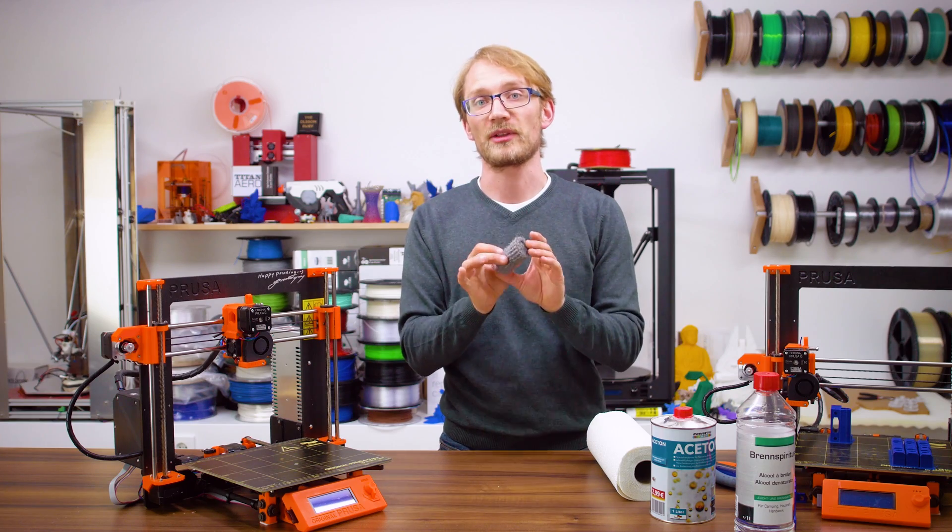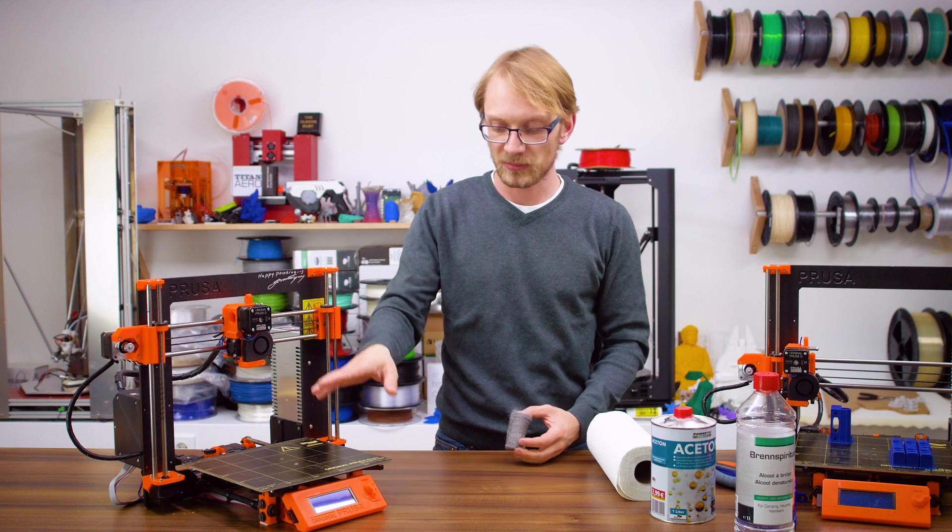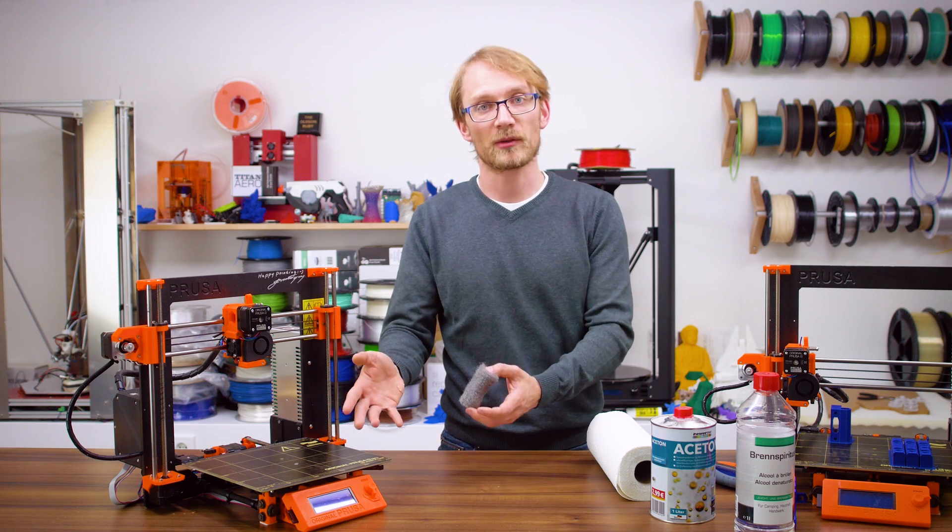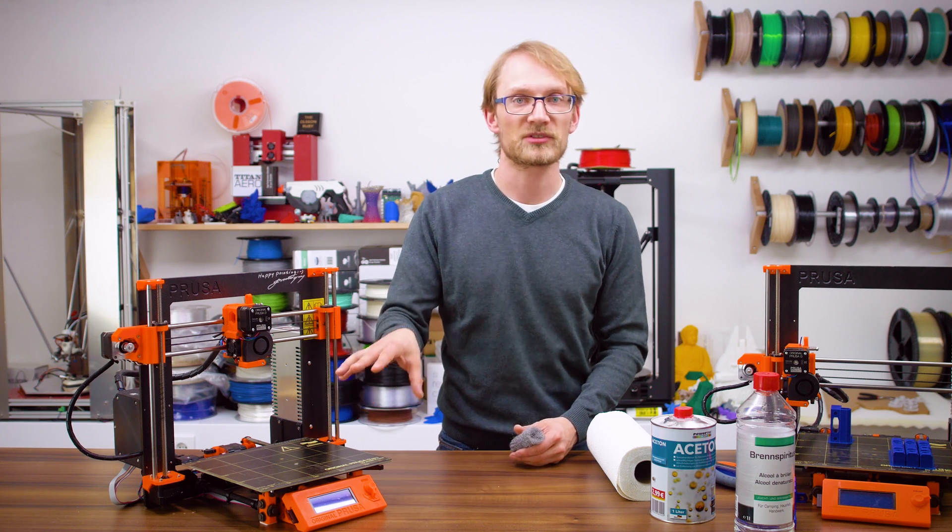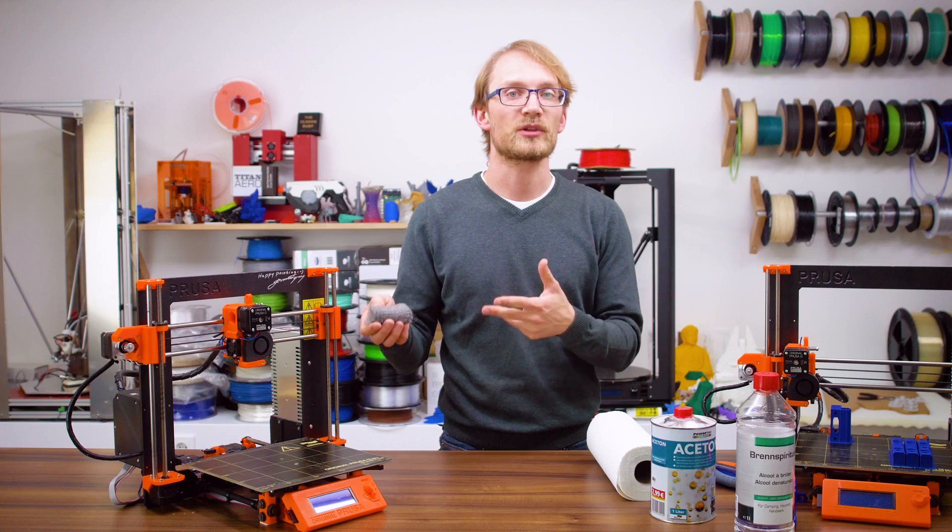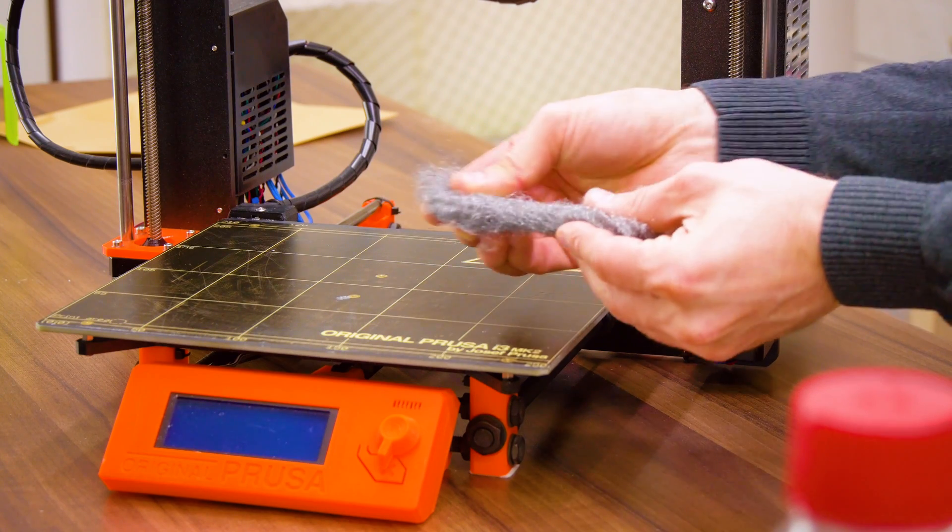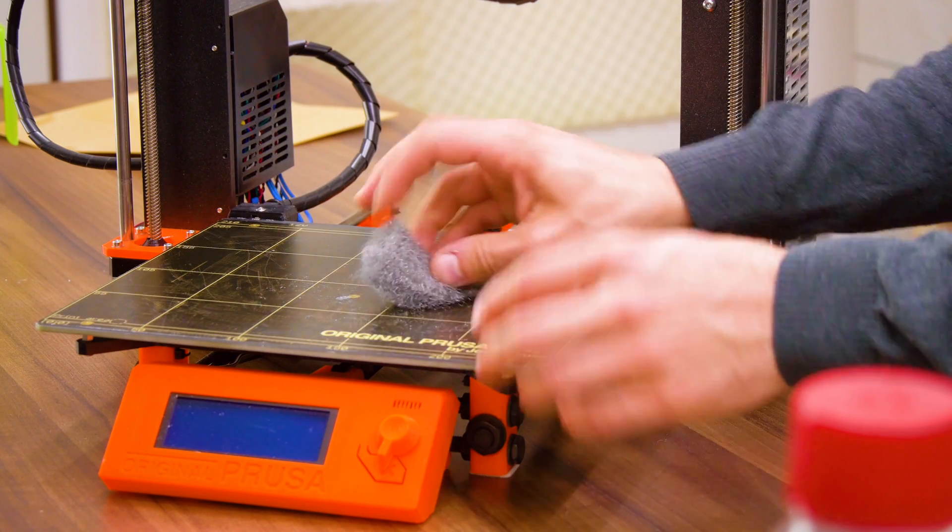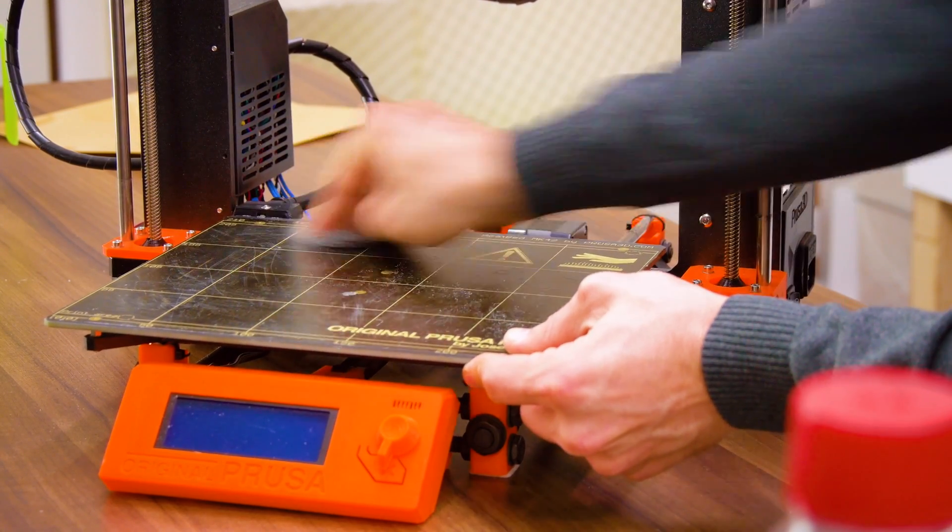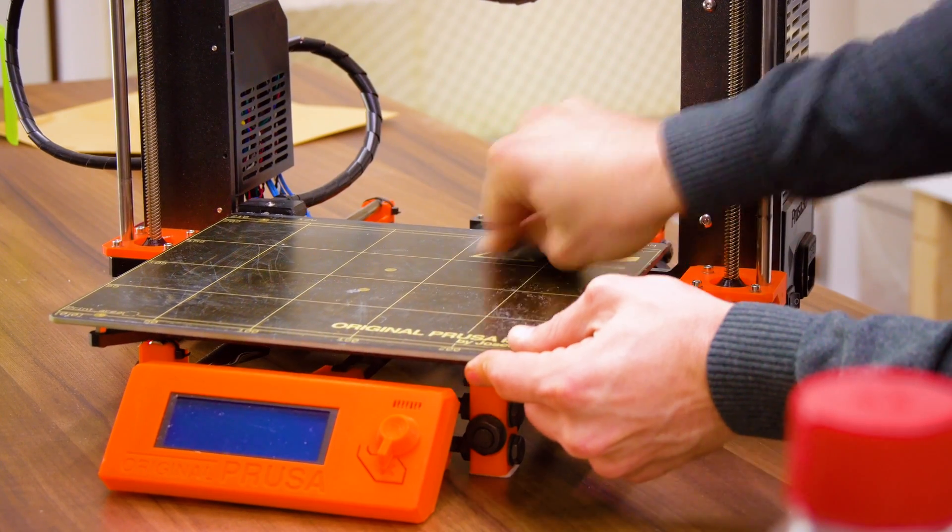And next up, steel wool. This actually does two things. First off, it takes off a tiny bit off of the top of the PEI, exposing some fresh material, and it also roughens up the surface a bit. So in theory, you get a bit more surface area for printed parts to stick to. I don't know which one of those two has the greater effect, but I do know that it works. And you don't have to scrub super hard here - it's more of a peeling than a complete surface grind.